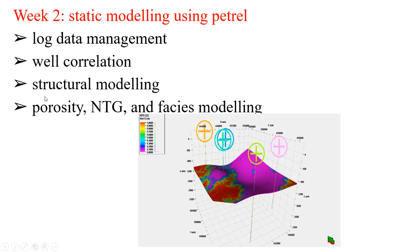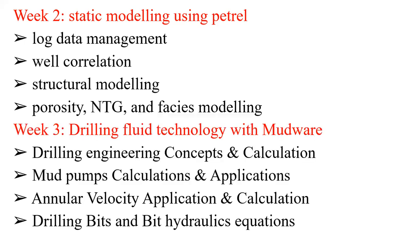For week two, we are going to rebuild the structural model, then populate properties on this model — like how porosity and net-to-gross varies — and see the various facies at each position, as well as how permeability varies within the formation. For the third week, we look at drilling fluid technology, mud pumps, the various types of mud pumps, and the calculations to get annular velocity and mud velocity within the tube. We also look at the bit and bit hydraulics equations.